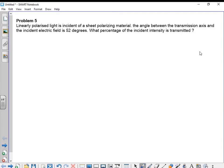Okay, let's look at the following problem. You have linearly polarized light incident on a sheet of polarizing material, and the angle between the transmission axis and the incident electric field is 52 degrees. We are asked to find the percentage of the incident intensity transmitted. We know from Malus's law that the light intensity is given as...